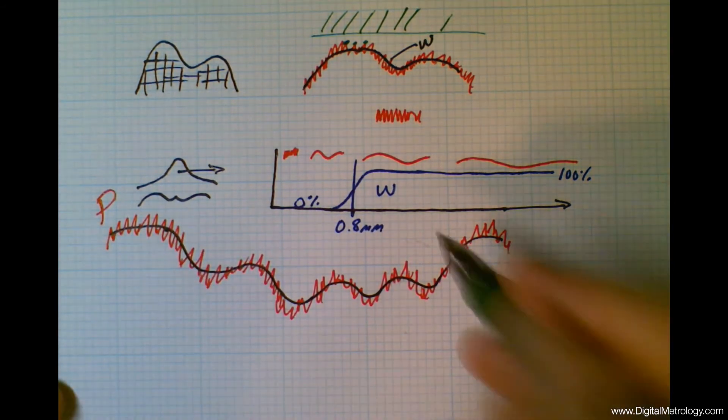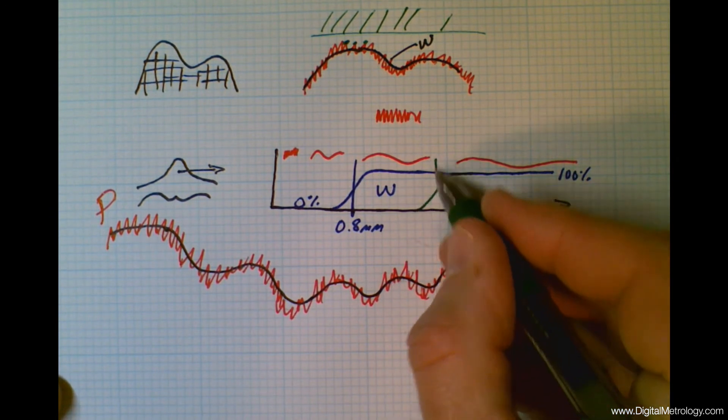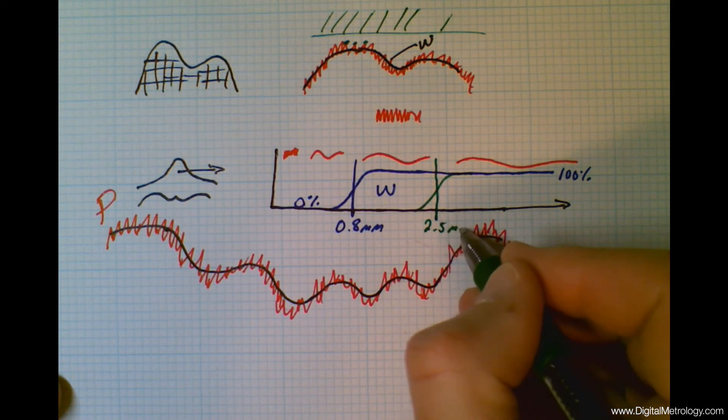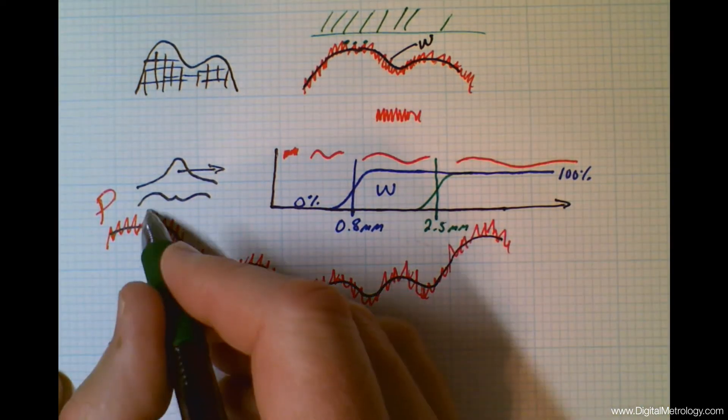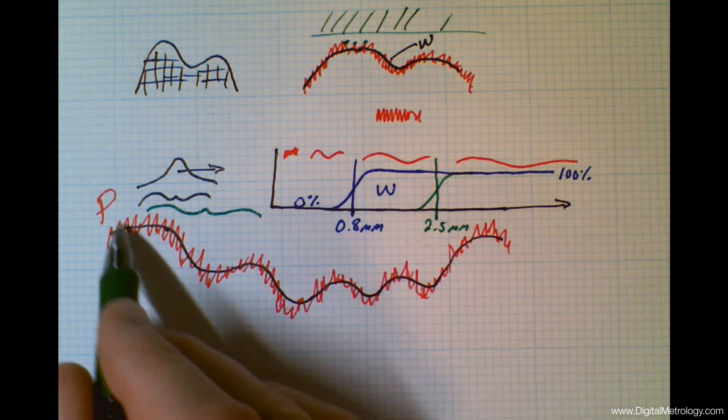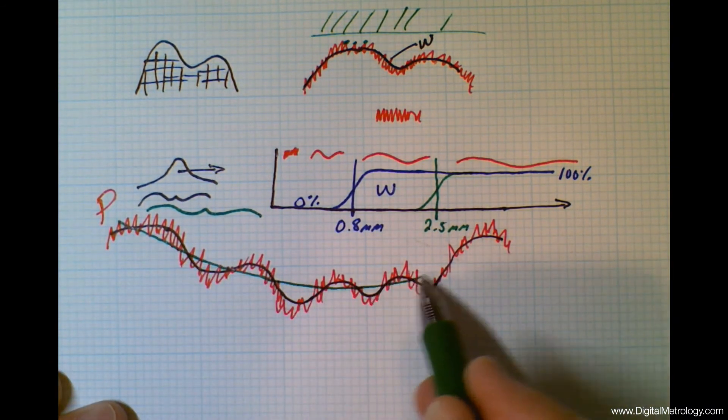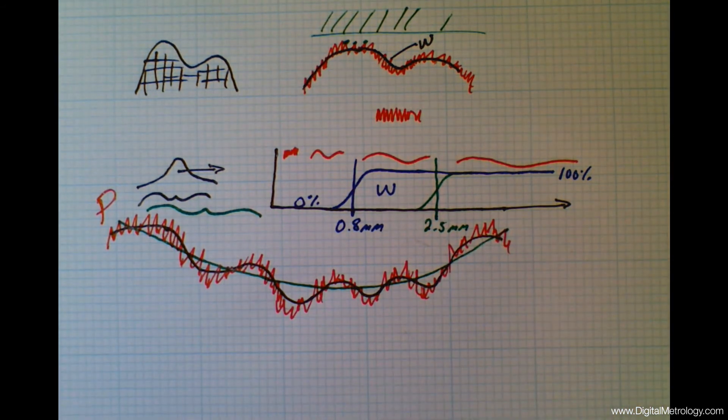Perhaps I'm interested in longer wavelengths. Maybe I'm interested in wavelengths that are maybe two and a half millimeters and longer. That would mean I would use a wider moving average. And I would slide that moving average through this surface and perhaps exploit or extract a different shape of waviness.